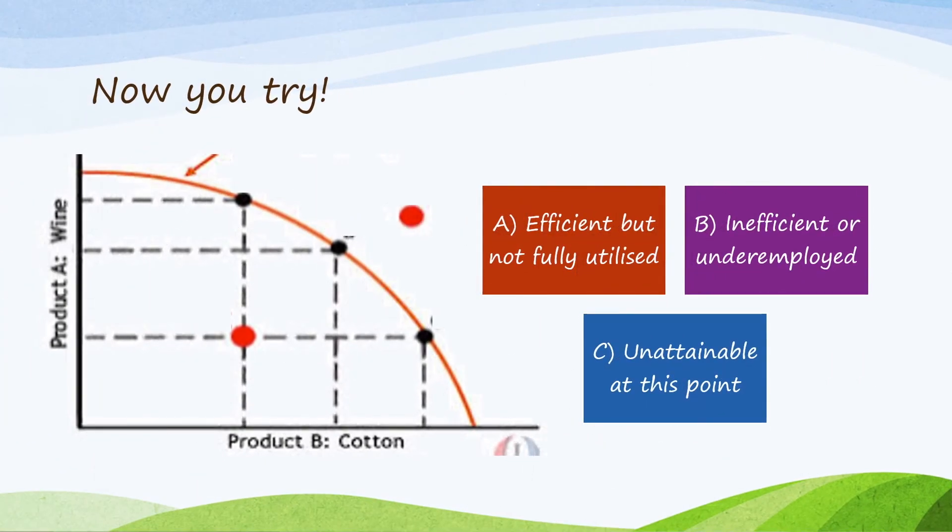Now you try. Match A, B and C to the points on the PPF of the production of wine and cotton.